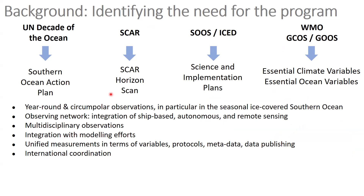All of this led to identifying the need for a year-round circumpolar observational mission, particularly in the seasonally ice-covered zone of the Southern Ocean, which is very difficult to observe. This includes the coastal waters, ice shelves, and the connection to the land ice. The goal is to build an observing network that integrates ship-based observations with autonomous platforms and remote sensing, as very multidisciplinary observations.